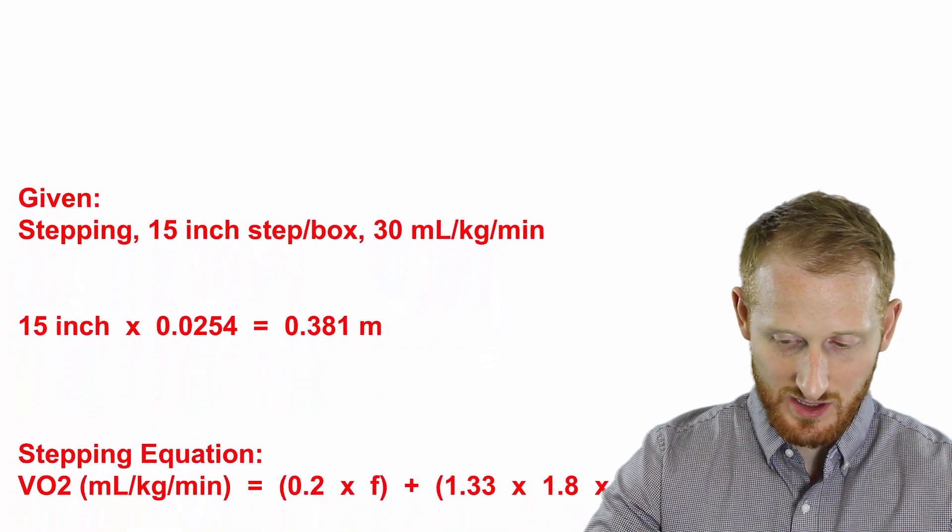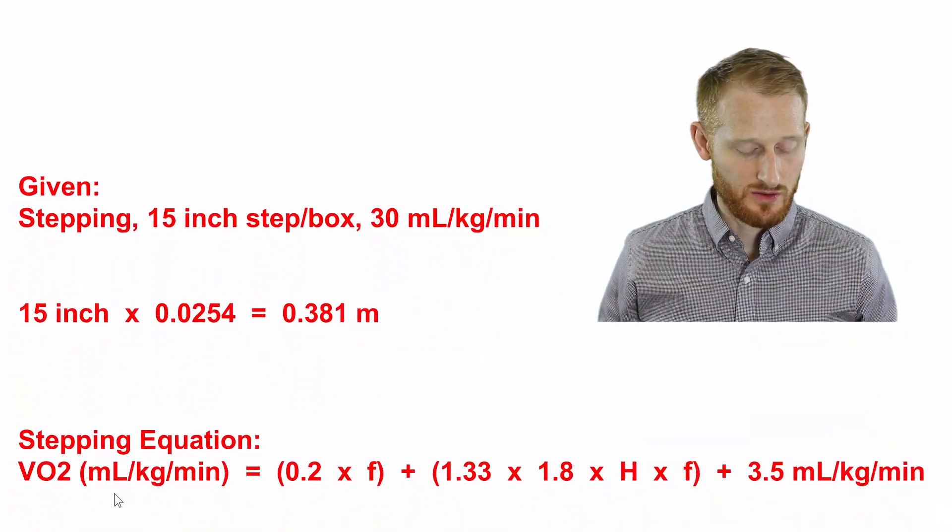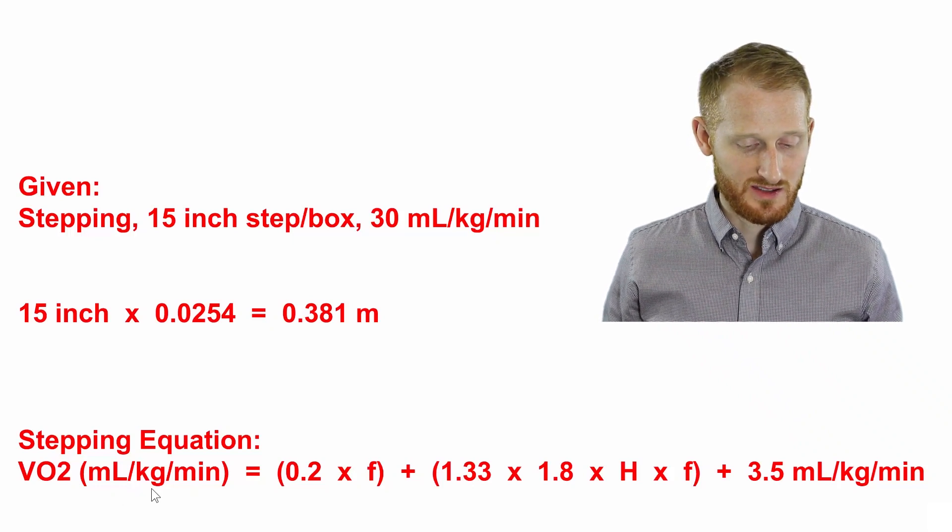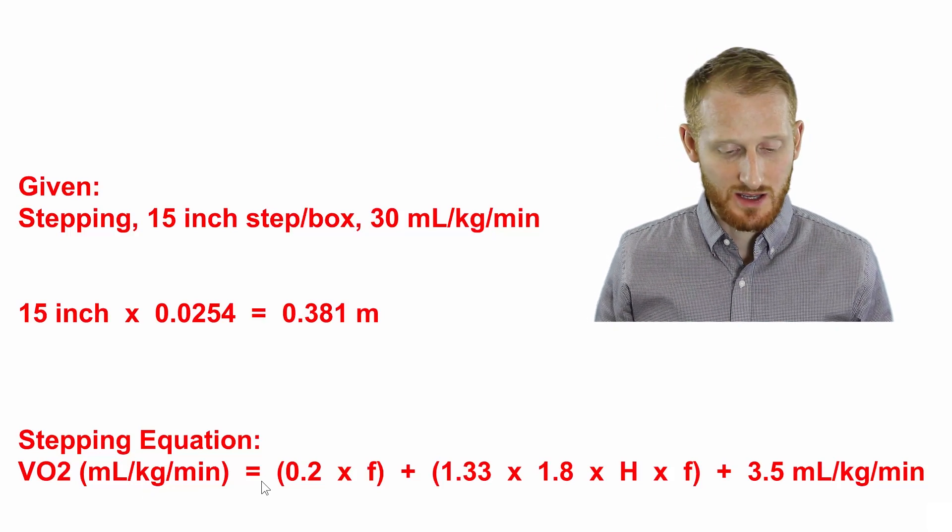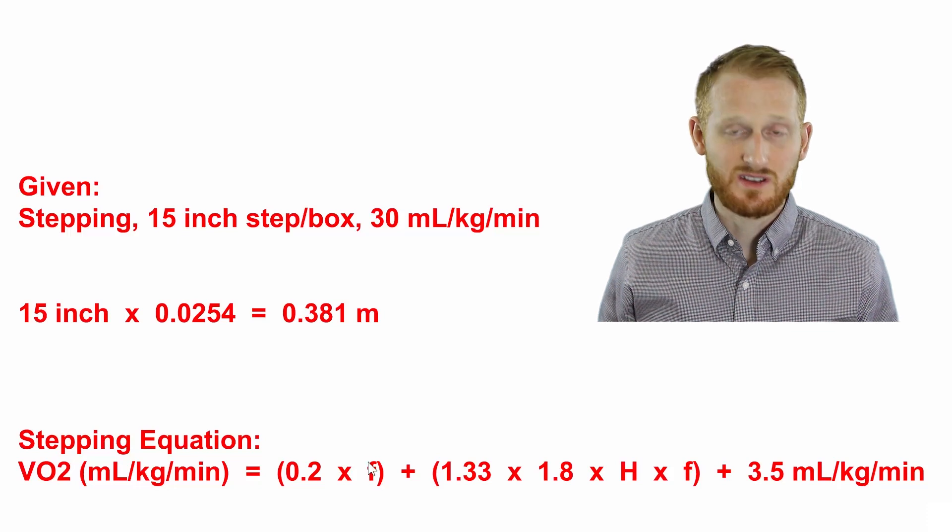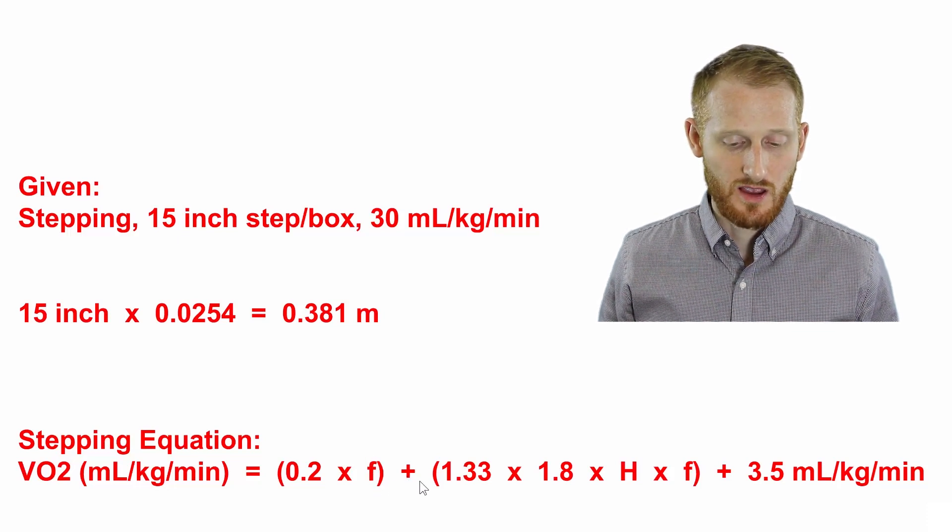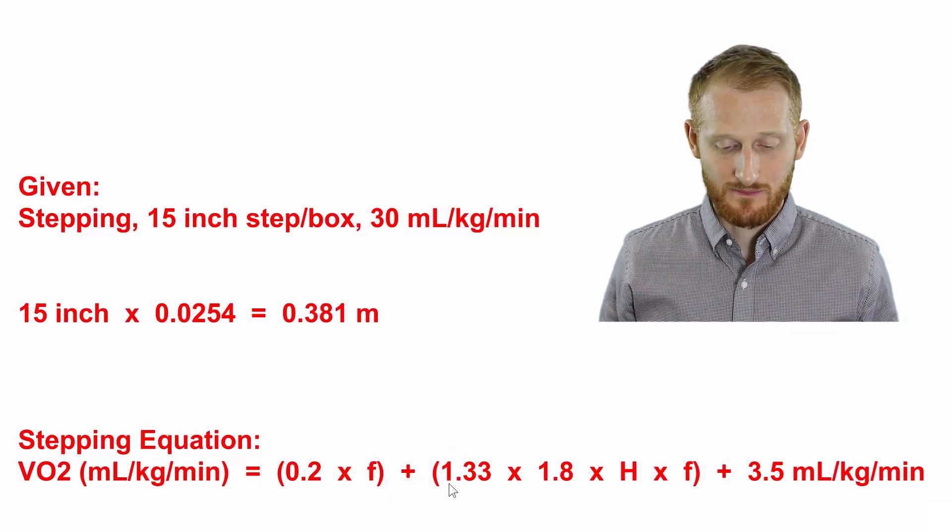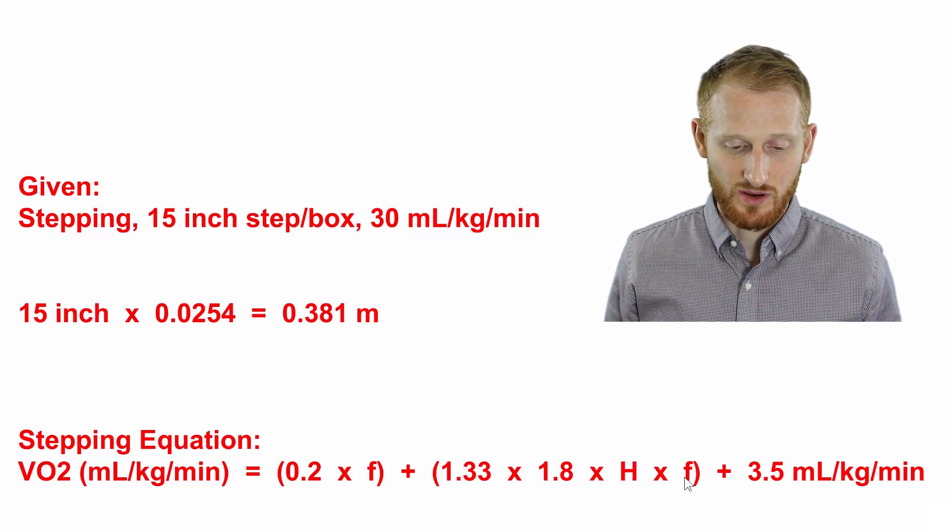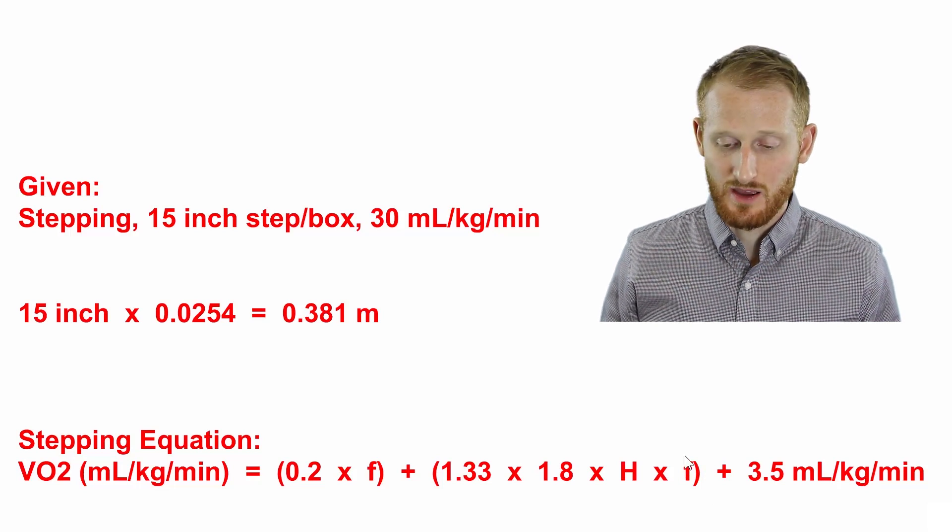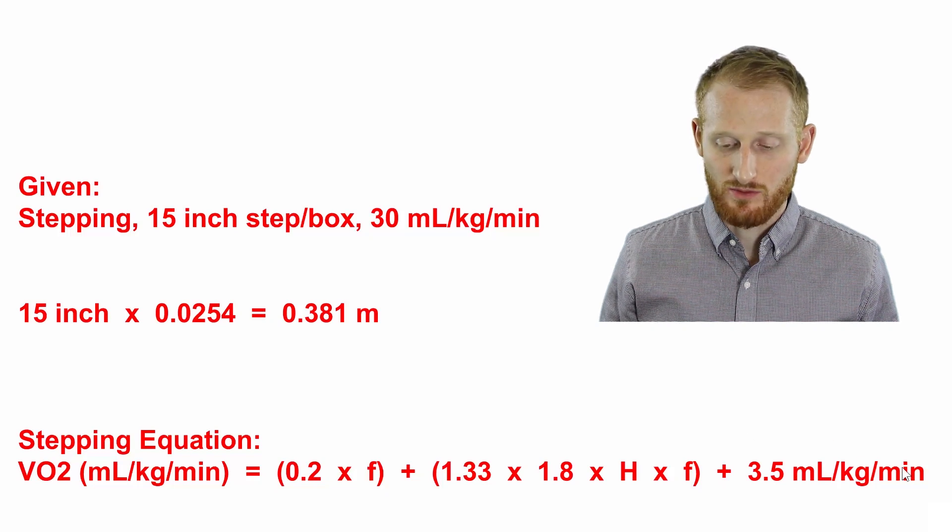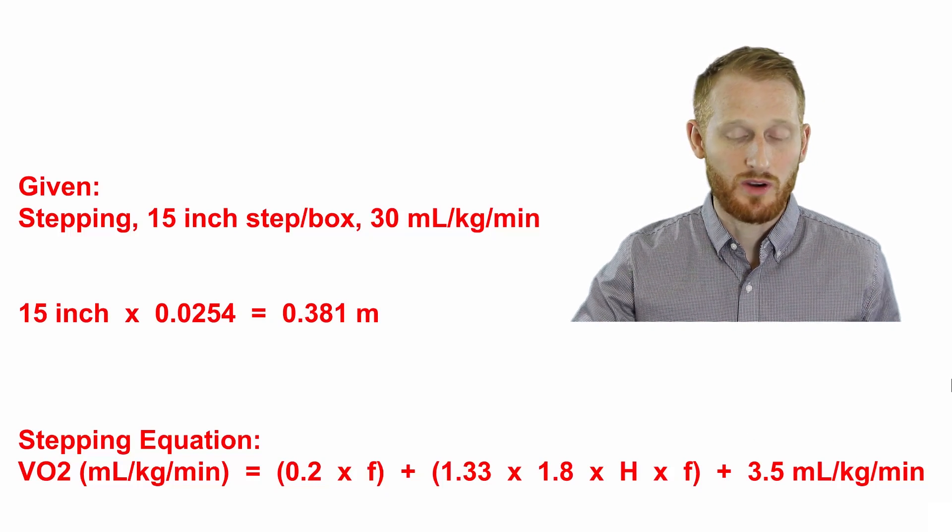Alright, so let's look at the stepping equation. The stepping equation is VO2 in relative units, milliliters of oxygen per kilogram of body mass per minute, equals open parentheses 0.2 times the frequency of the stepping close parentheses, plus open parentheses 1.33 times 1.8 times the height of the step times the frequency of the stepping close parentheses, plus 3.5 mL/kg/min, with this 3.5 being the resting component of the exercise.